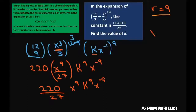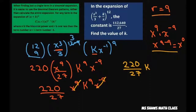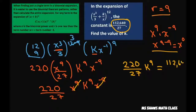x to the 9th times x to the negative 9th is x to the 9 minus 9, which is x to the 0. So we can disregard that. We now have 220 divided by 27 times k to the 9th power equals our constant, which is 112,640.